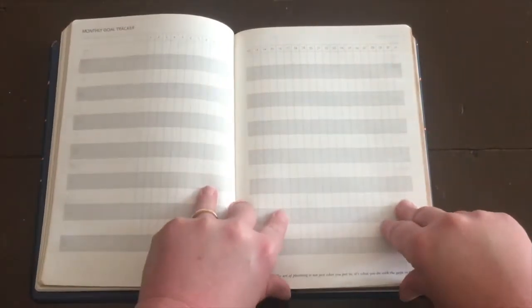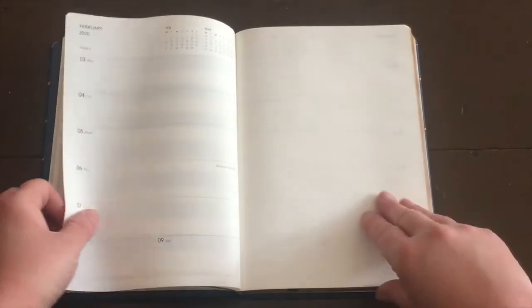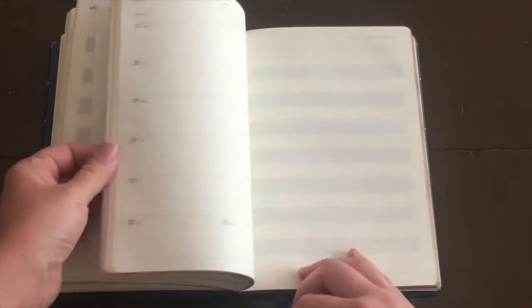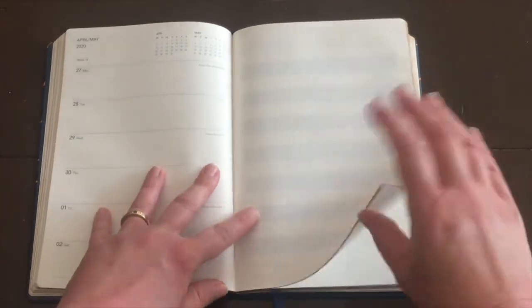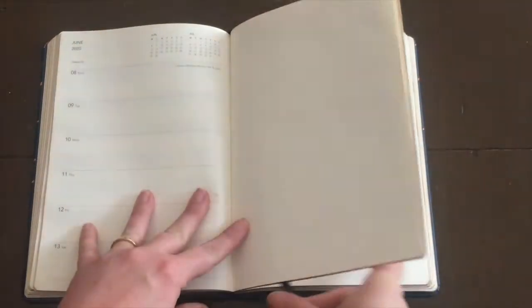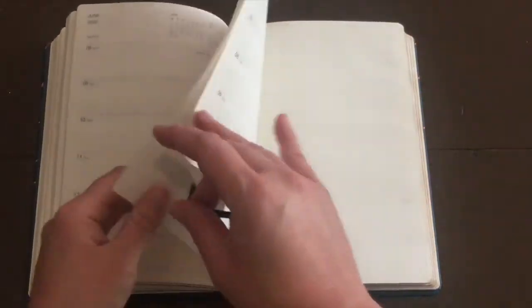You also have your tracker in this one as well, your monthly goal tracker. And then each month continues just like the one before it. So you have that consistency all the way through the diary. It's really lovely. And the texture of the paper is just beautiful.